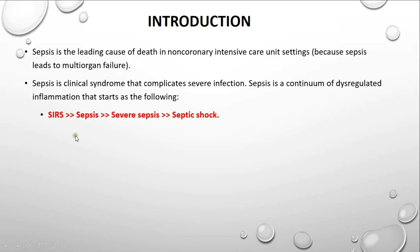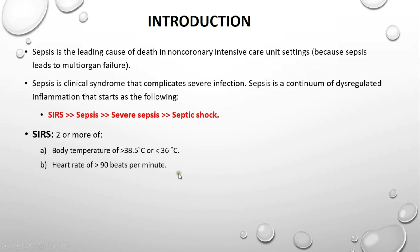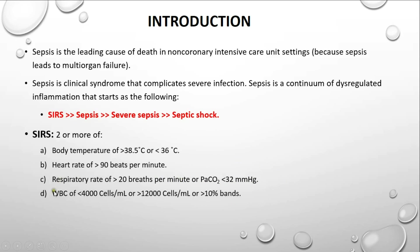SIRS is defined clinically as two or more of the following: one, body temperature of more than 38.5°C or less than 36°C; two, heart rate of more than 90 beats per minute; three, respiratory rate of more than 20 breaths per minute or a PaCO2 of less than 32 mmHg, indicating tachypnea due to increased elimination of arterial CO2; and four, WBC count of less than 4,000 cells/mL (leukopenia) or more than 12,000 cells/mL (leukocytosis) or more than 10% bands.